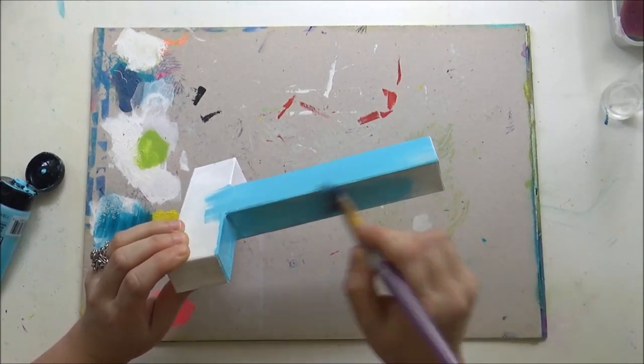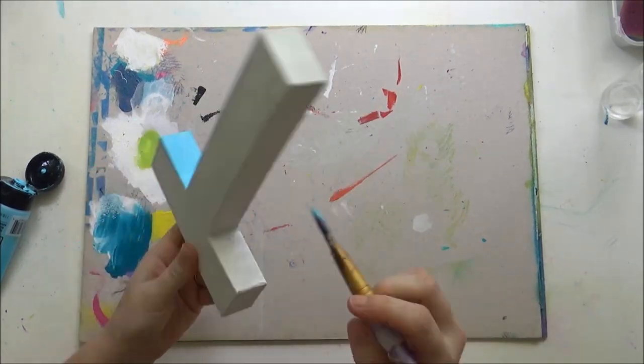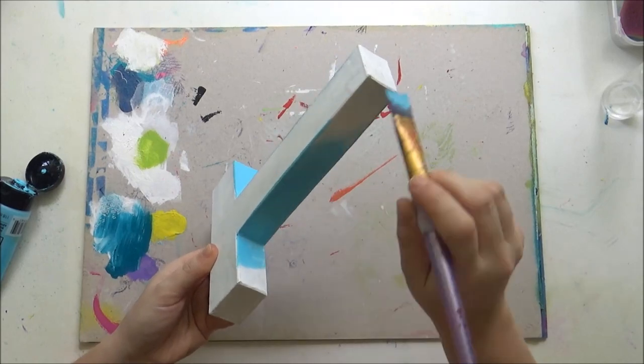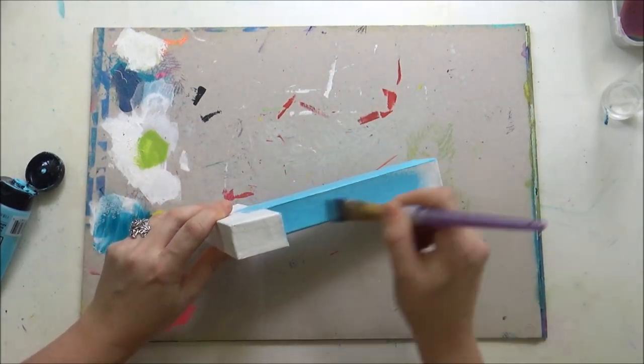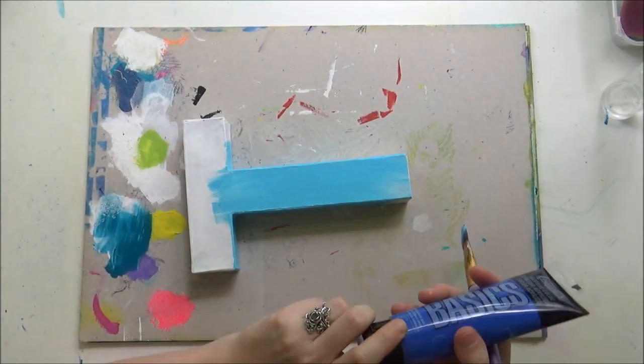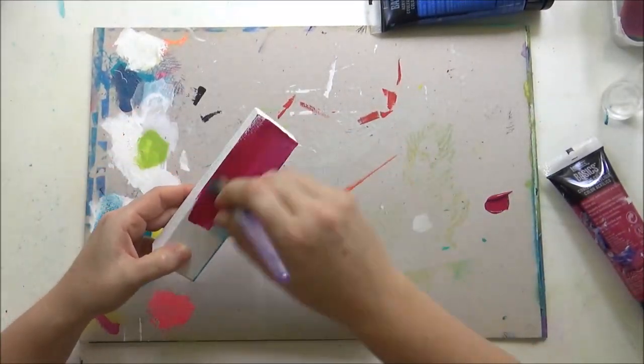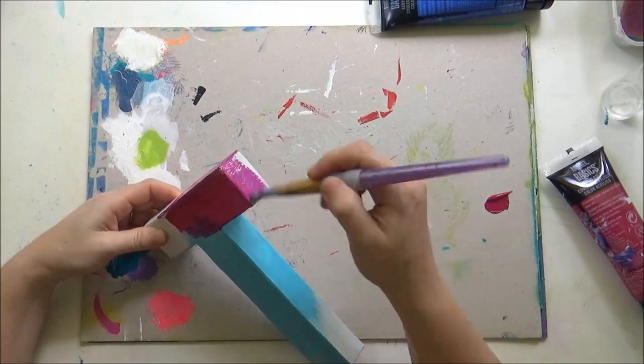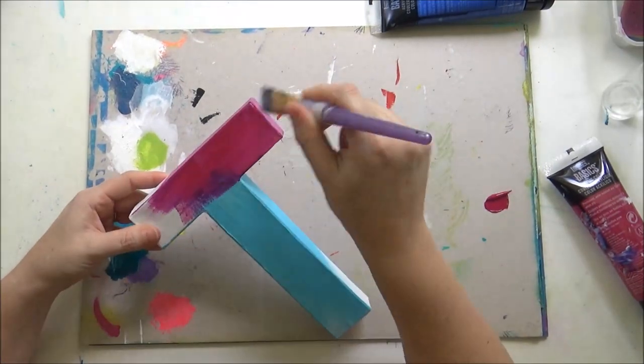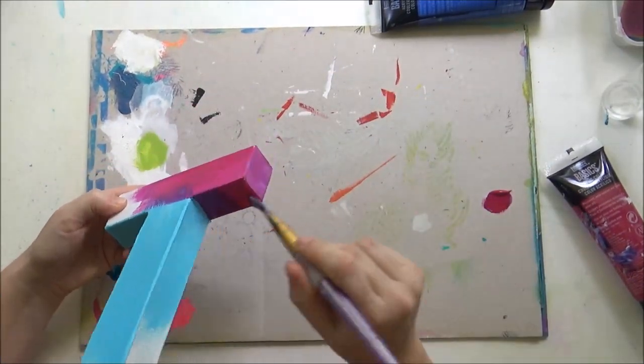I'm going to do something similar that I've done before, which is applying a few different colors on the background. I'm starting with a bit of light turquoise, and then I'm going to add some hot pink just to contrast that light blue. Then I move on to this beautiful cobalt blue hue.